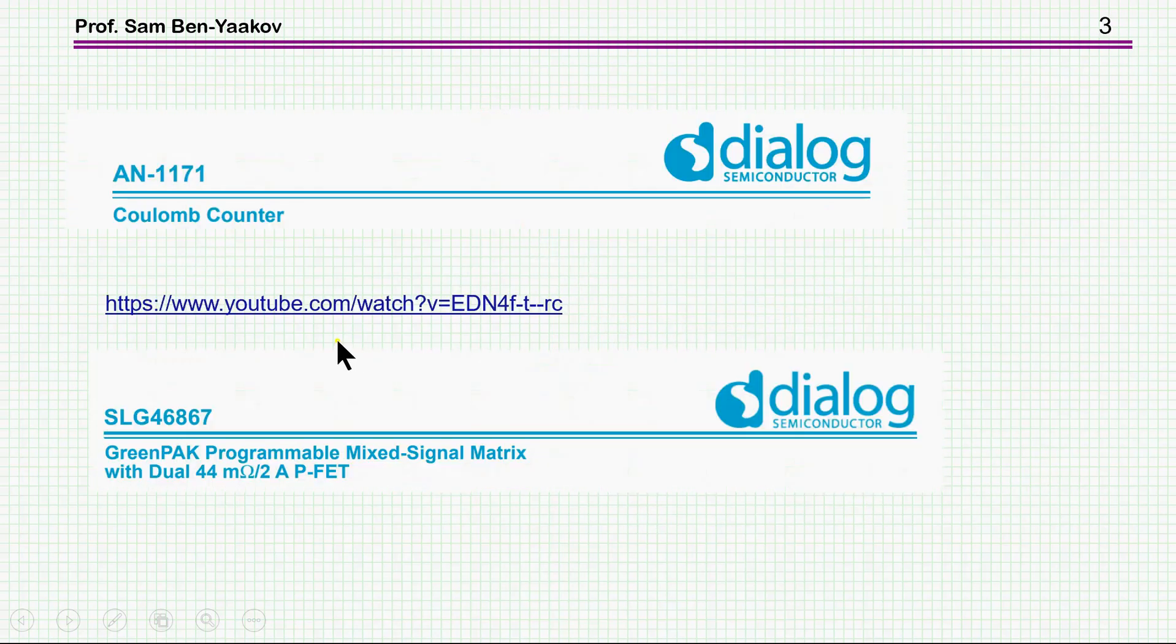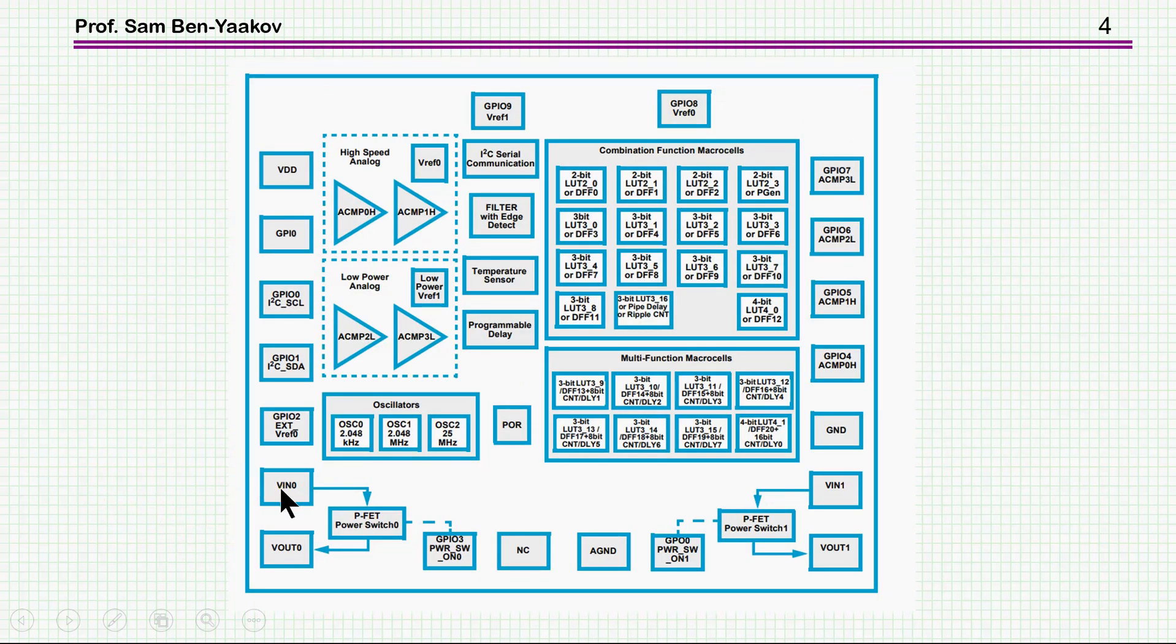Now, the material I'm referring to in this presentation is the application notes by Dialog Semiconductors regarding a Coulomb counter. And there is another video that explains about the same thing by the company. And this is the data sheet of this device. It's a mixed mode, analog, digital, programmable IC. And just have a look at it. We're not going to dwell into it in any way. This is just for reference to understand what is the device.